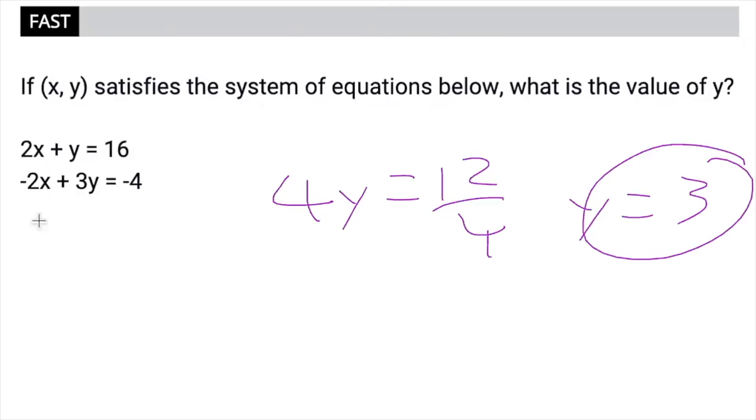So with systems of equations, you are allowed to add them together. This is part of the elimination strategy. If we add them together, we get 2x minus 2x, so x disappears. Now we're just solving for y. I added y to 3y, got 4y, and added 16 to negative 4, got 12. Then to get y by itself, we divide by 4. 12 divided by 4 is 3. So that's how I did that one in under 10 seconds.